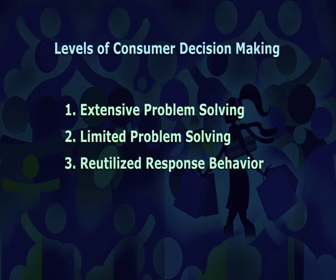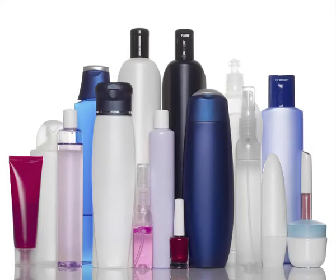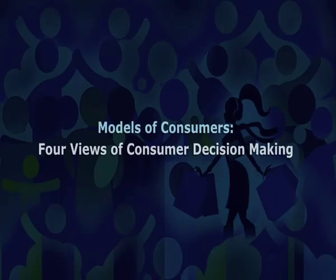Our third point is routinized response behavior. There are some products which are used on a daily basis like food items, soap, shampoo, etc. For these products, purchase is routinized. Our second point is models of consumers: four views of consumer decision making. First, an economic view. Second, a passive view. Third, a cognitive view. Fourth, an emotional view.